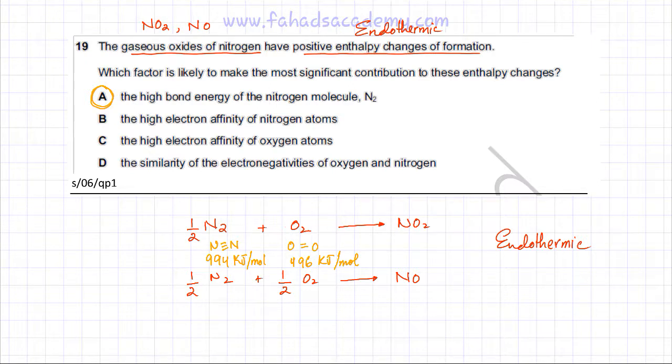The other option is the high electron affinity of nitrogen atoms. That basically means that nitrogen has a very high tendency to attract electrons. But that would not be an issue. The high electron affinity of the oxygen atom - oxygen also likes to form negative ions. But in this case, they're basically sharing electrons and they're forming covalent compounds.